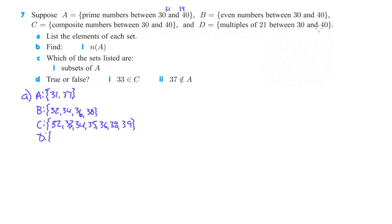And then D, multiples of 21 between 30 and 40. Interesting, because the multiples of 21 would be 21, and the next one is 42. That does not fit in there, so we have the empty set for D. So you could write it like that, or remember, we can do this as well.